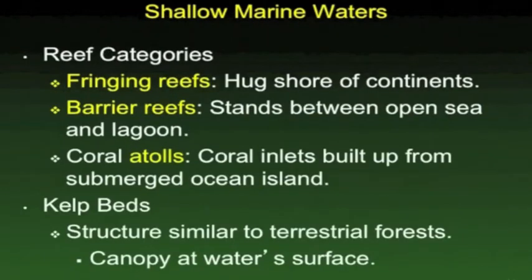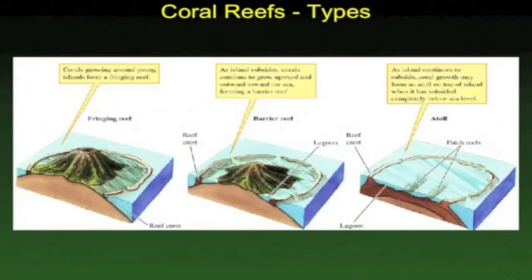Reefs are mainly found in shallow marine waters, though some are now found in deeper waters. They tend to be close to the shoreline. One pattern in reef development is that reefs form around a volcanic island, and as that island sinks, the reefs grow higher and further from the island. Eventually, if the island subsides below water level, you end up with an atoll — a circle of reefs without any island in the middle. So we have fringing reefs, barrier reefs, and atolls as basic structures.